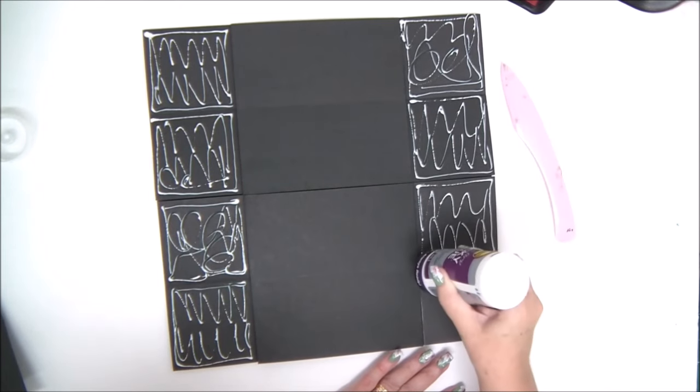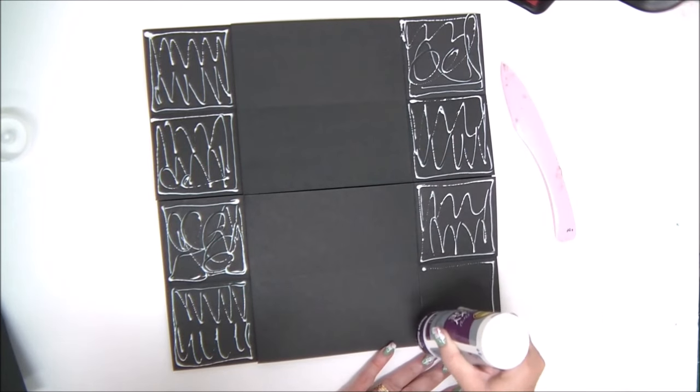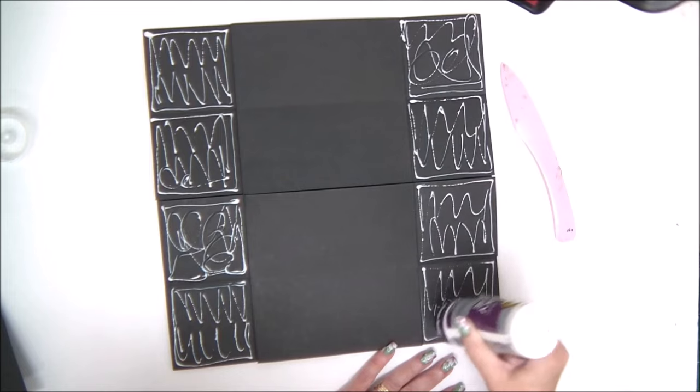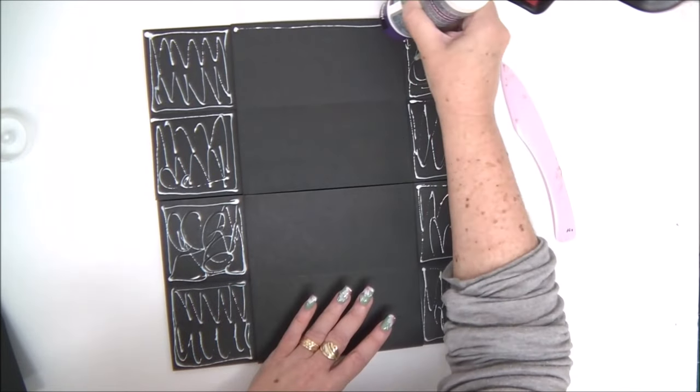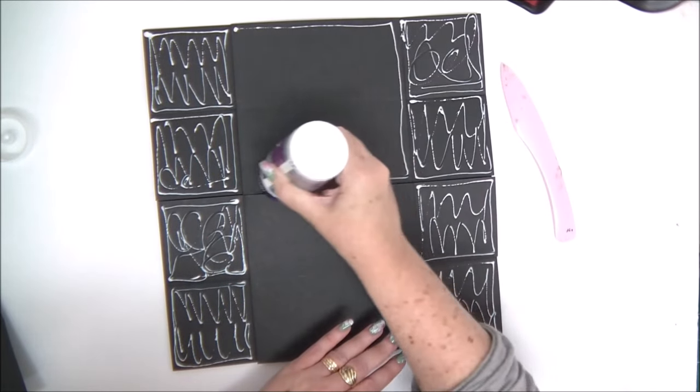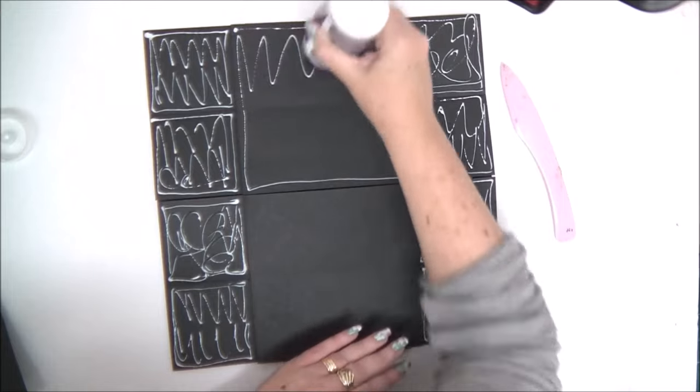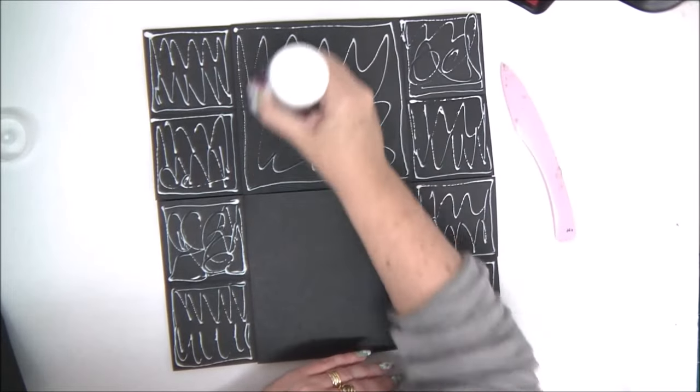And later, next we're going to apply glue to the center as well. So basically on this piece, we're applying glue on everything. But again, without going over the score lines.